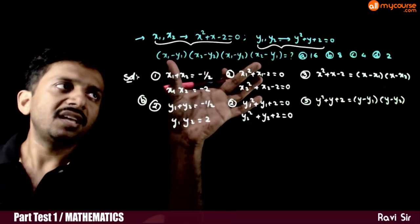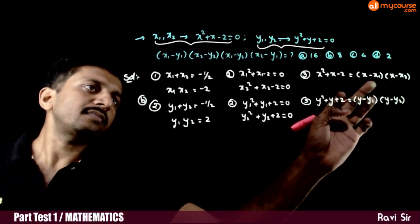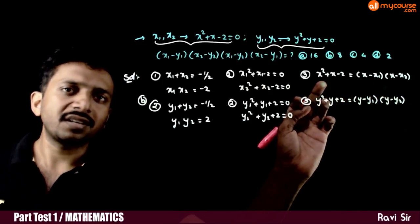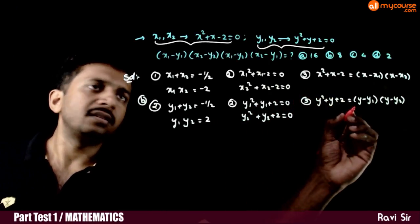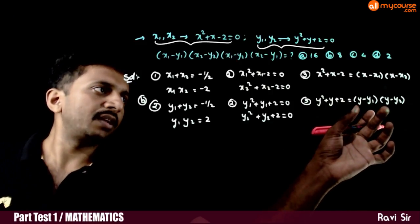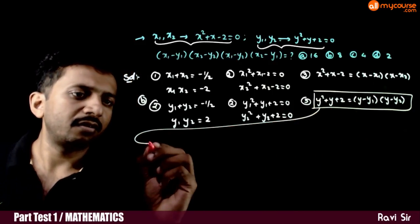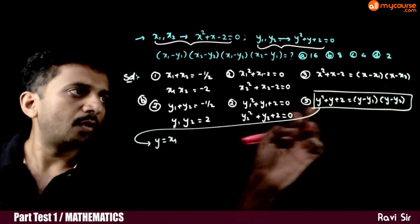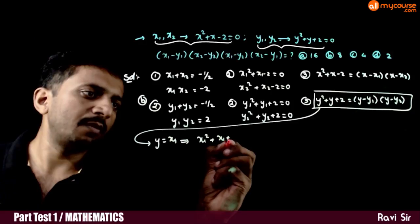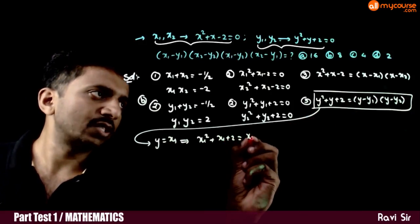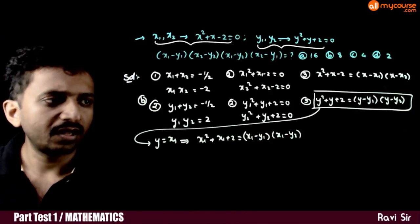Now, using the third form: x minus x1 into x minus x2 equals x squared plus x minus 2. Looking at the expression x1 minus y1 into x1 minus y2, I will substitute y equal to x1 in the factored form of the second equation. So y squared plus y plus 2 evaluated at y equals x1 gives x1 minus y1 into x1 minus y2.